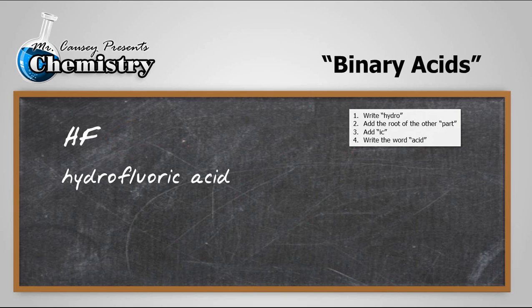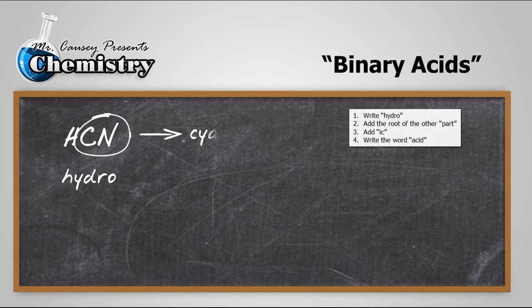All right let's try another one. HCN. So we'll write hydro. Then notice that our second part there is CN and that's cyanide. And the root for cyanide is cyan. So we'll write cyan. Add IC. And the word acid. And we have hydrocyanic acid. They're really just that simple.